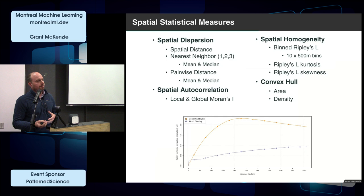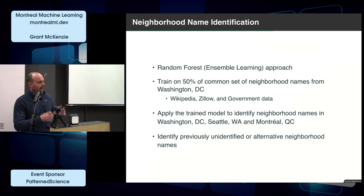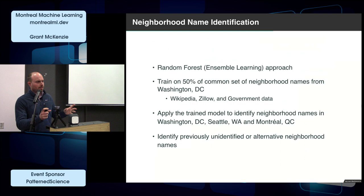To determine which spatial measures best differentiate neighborhoods from background noise like Whole Foods, we took a simplistic approach and threw this into a random forest model, which performed reasonably well. We trained it on 50% of the common neighborhood names — a training dataset based on things like Wikipedia, Zillow, and government data. It's non-exhaustive, so it doesn't include all the unique idiosyncrasies of local data — like what the local population in Washington, D.C. would actually call a neighborhood. We trained on 50% of common names and used the rest for validation.